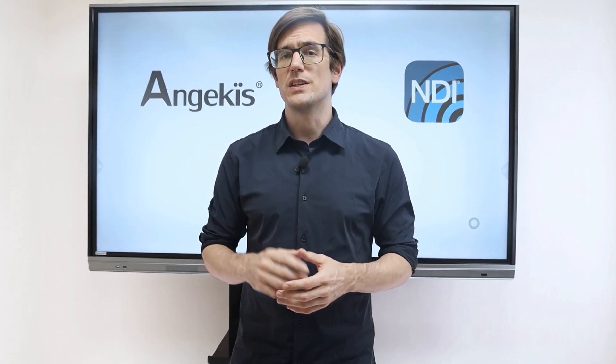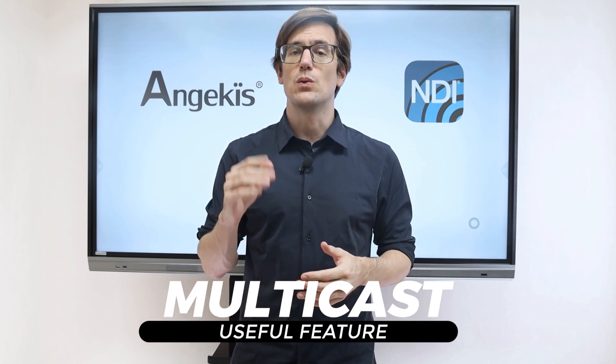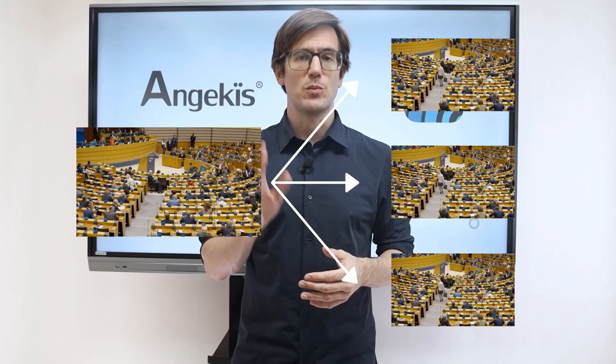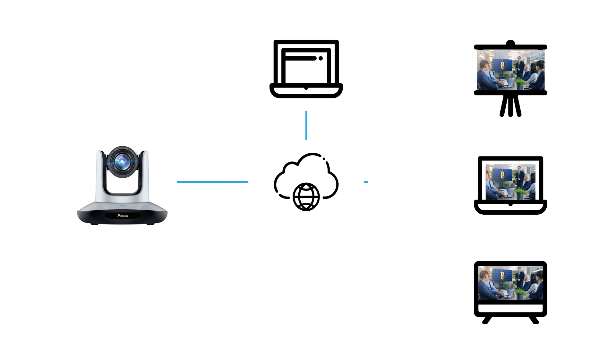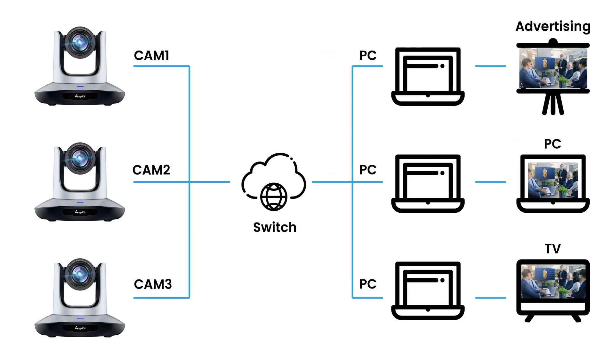One very useful feature of NDI is the ability to do multicast. This means you can take one source and stream it to multiple outputs with minimal bandwidth consumption. This is useful in a situation where you want to duplicate your feed, and also allows you to do more advanced tricks with your production, like sending the same video to several displays but using separate audio over each one.